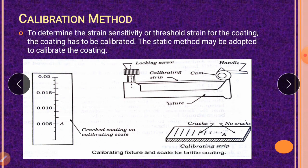Calibration method. The calibration method is when you have applied the coating on the surface. But before applying that, you have to calibrate the coating using some basic standard method. If you calibrate it, then you can use it and determine the stresses for any material. To determine the stress sensitivity or threshold strain for the coating, the coating has to be calibrated. The static method may be adopted to calibrate the coating.